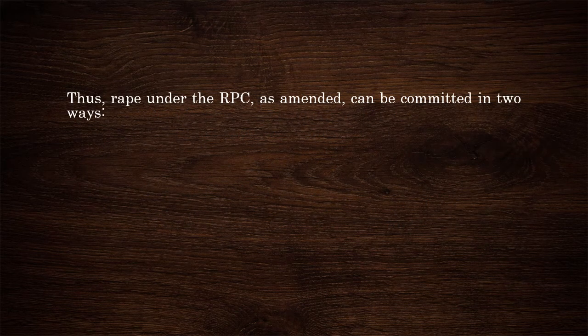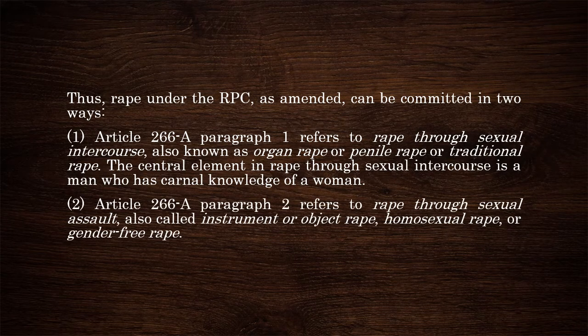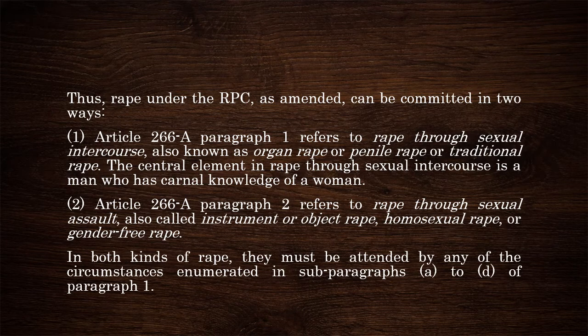Thus, rape under the Revised Penal Code as amended can be committed in two ways. Article 266-A, Paragraph 1 refers to rape through sexual intercourse, also known as organ rape, penile rape, or traditional rape. The central element is a man who has carnal knowledge of a woman. On the other hand, Article 266-A, Paragraph 2 refers to rape through sexual assault, also called instrument or object rape, homosexual rape, or gender-free rape. In both kinds of rape, they must be attended by any of the circumstances enumerated in subparagraphs A to D of Paragraph 1.